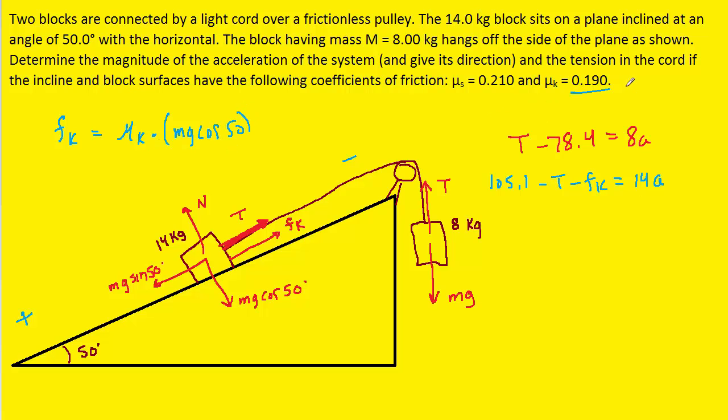Now, we know the value of μk, that's given to us as being 0.19. And then we can plug in the mass of this block, g, and then multiply this all out. And when we do that it works out to be 16.8. So that's the value for the kinetic frictional force that we're going to be plugging into our equation over here.